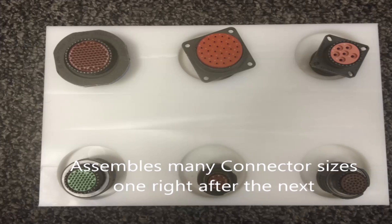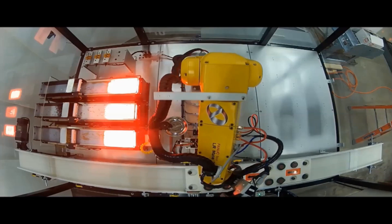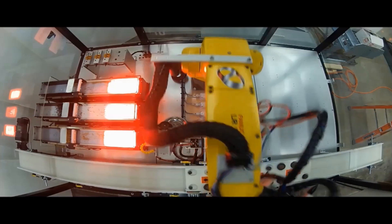The system starts when a pallet containing six connectors enters the system. Each pallet can contain all different types and sizes of connectors and these can all have different recipe combinations of contacts and seal plugs.